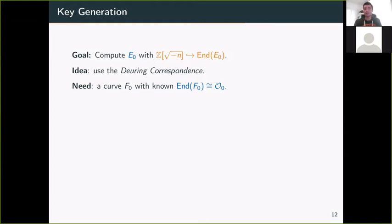To use this Deuring correspondence for our algorithm, we need a starting curve F₀ with a special endomorphism ring End(F₀) isomorphic to the maximal order O₀, which we know. In fact, for this special curve, we also require that we can evaluate the endomorphisms efficiently. You can show you can find such a curve for every prime p, but there are only a few of them. For most other supersingular curves, we don't know what their endomorphism ring looks like and how to evaluate them. So this is really a special case, but we know it exists.